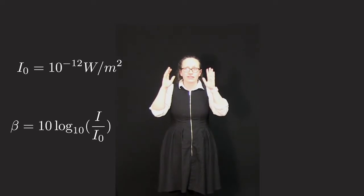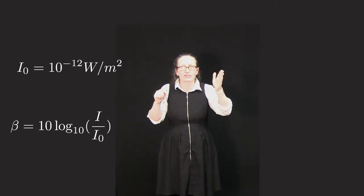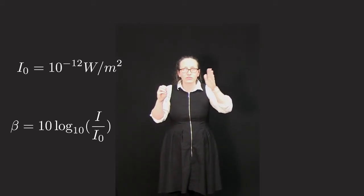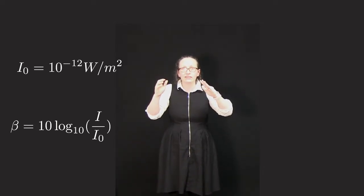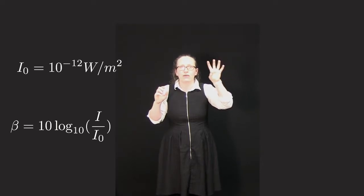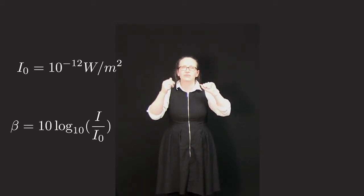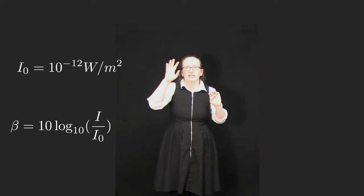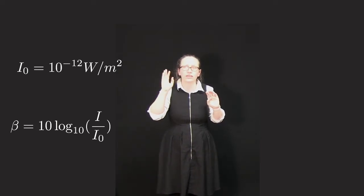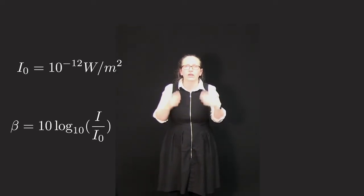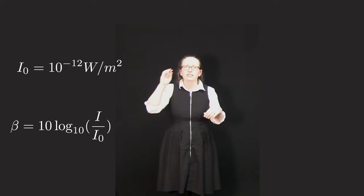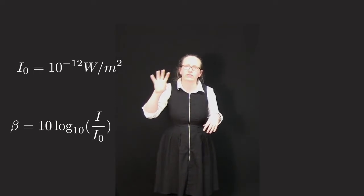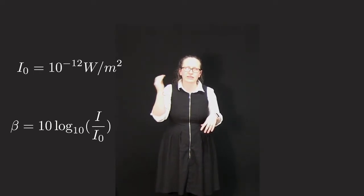In this equation beta is the sound level in decibels, the log is a logarithm to the base 10, I is the intensity of the sound that we're considering, and as we've said I0 is 10 to the minus 12 watts per meter squared. To give you a feeling for the kinds of numbers that we're talking about in decibels, zero decibels is the threshold of hearing, so that's the smallest sound that we can detect.